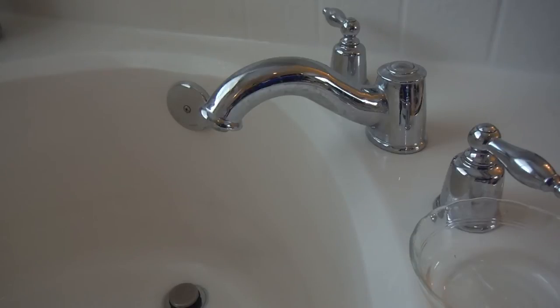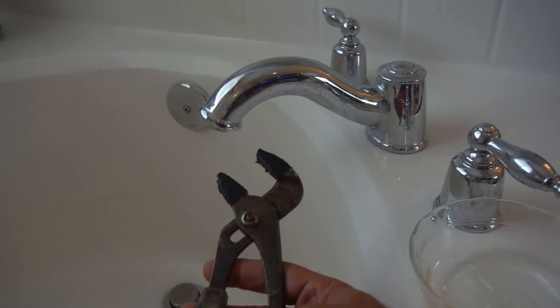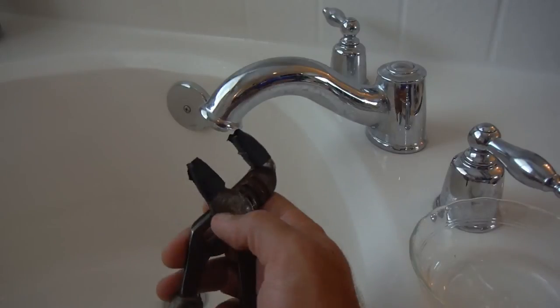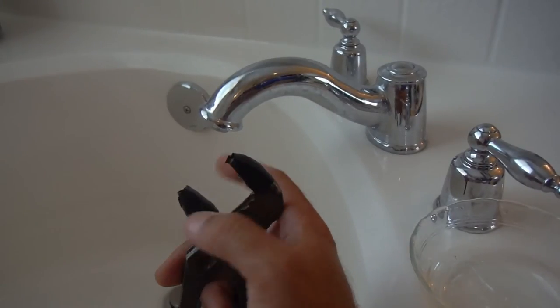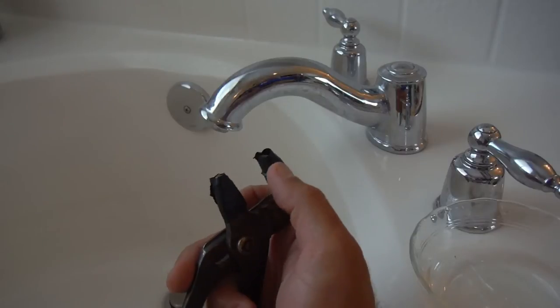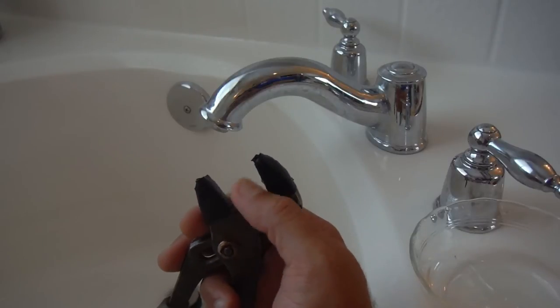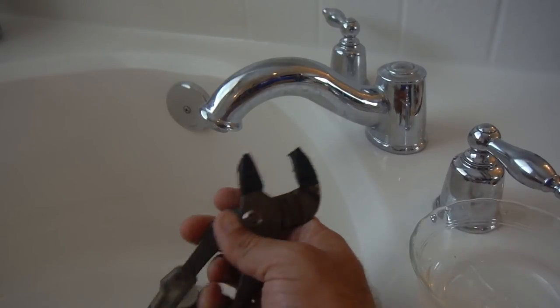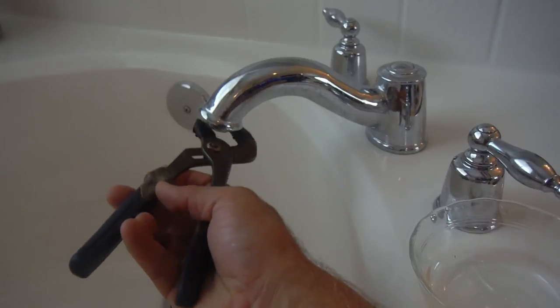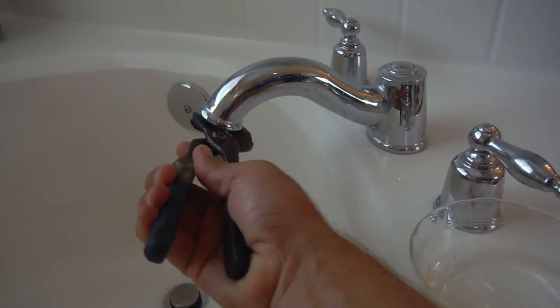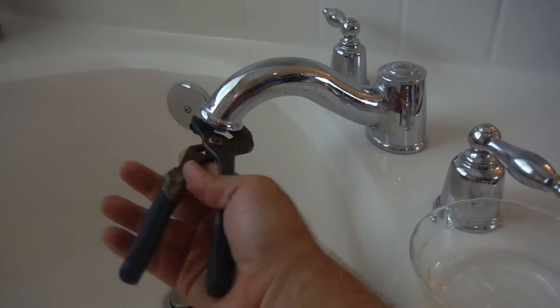The easiest way I found is to use some channel lock pliers. In this case, I wrapped the jaws of this set of pliers in some electrical tape. I think it helps to prevent scratching the surface. You just reach up underneath and loosen that. It's threaded righty tighty, lefty loosey.